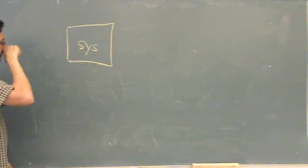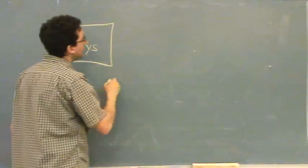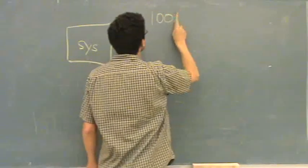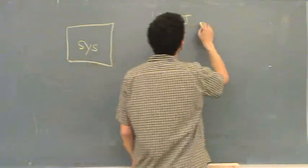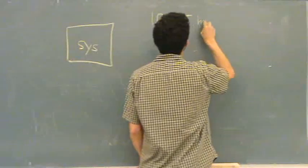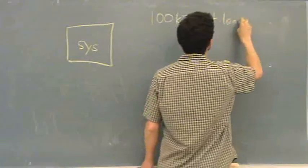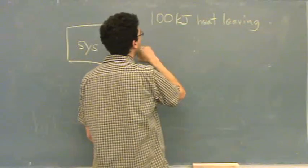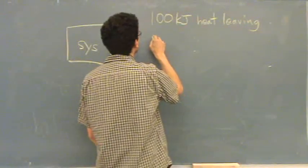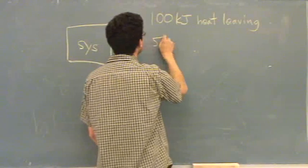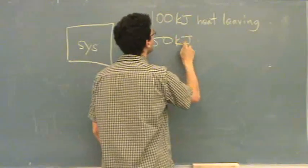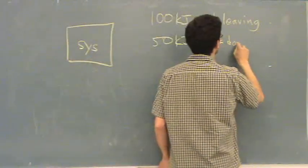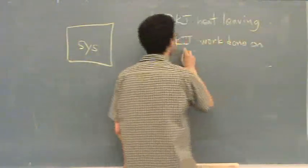And then they'd say something like 100 kilojoules heat leaving the system, and you'd say 50 kilojoules of work done on the system.